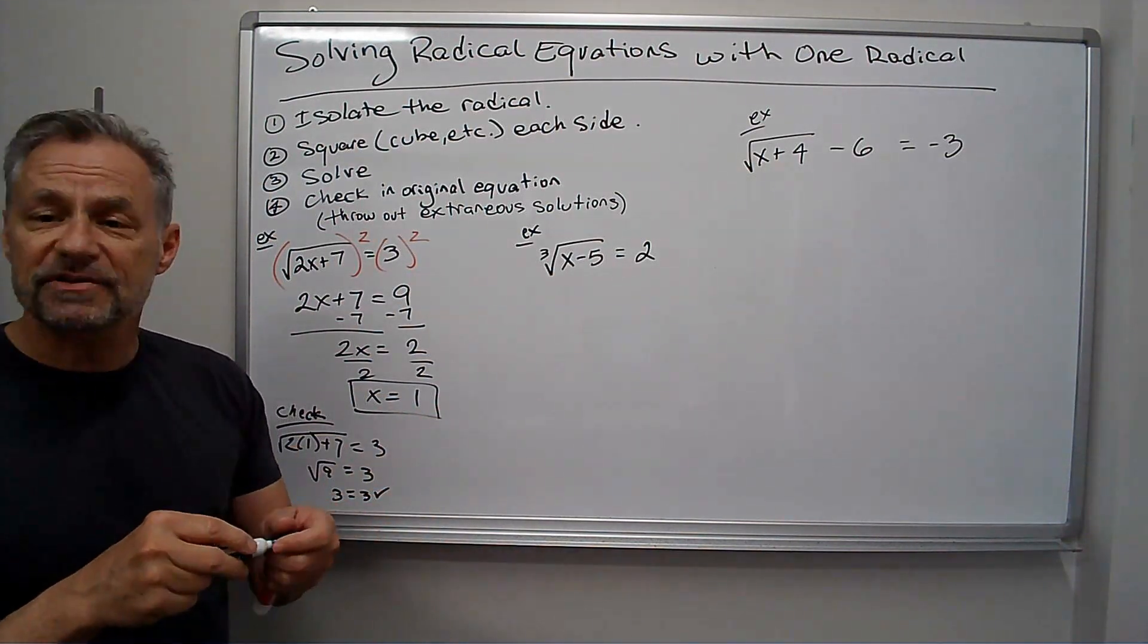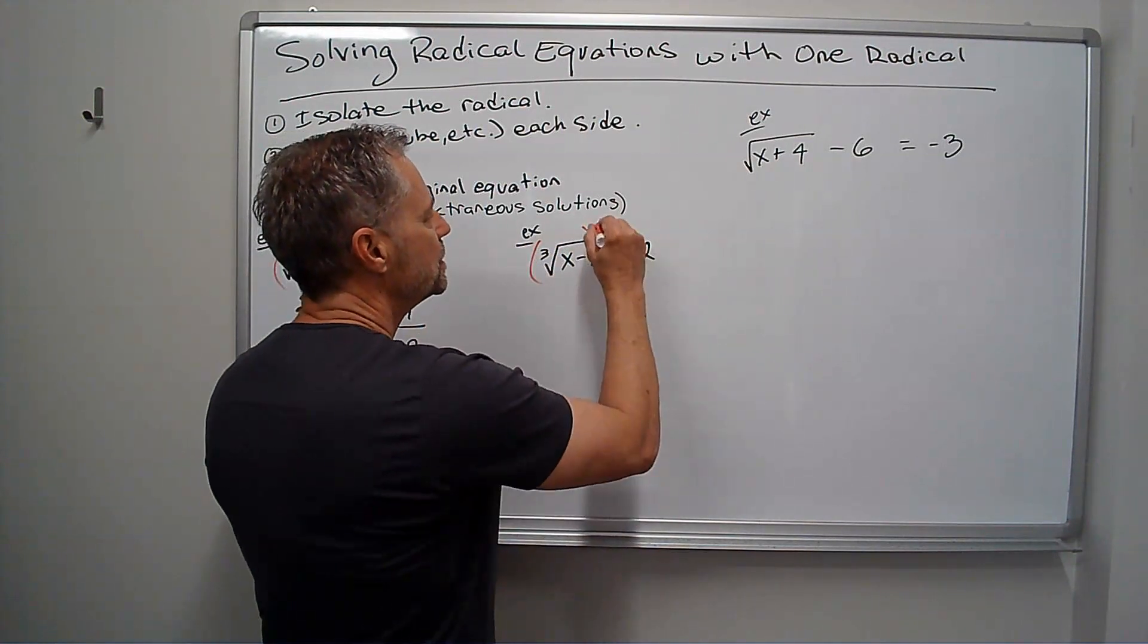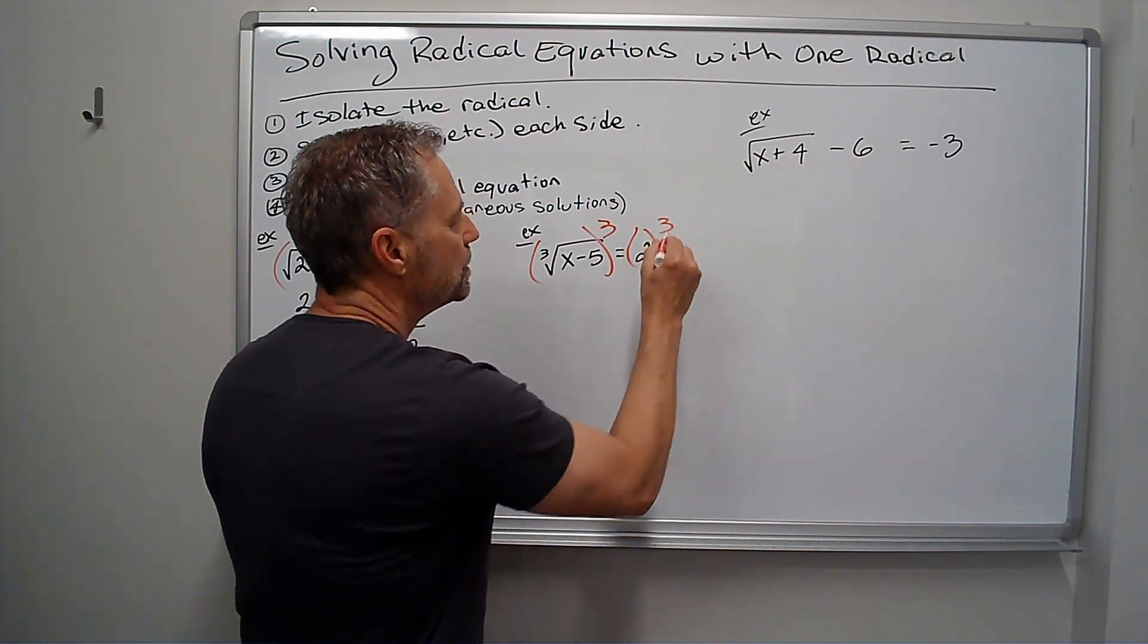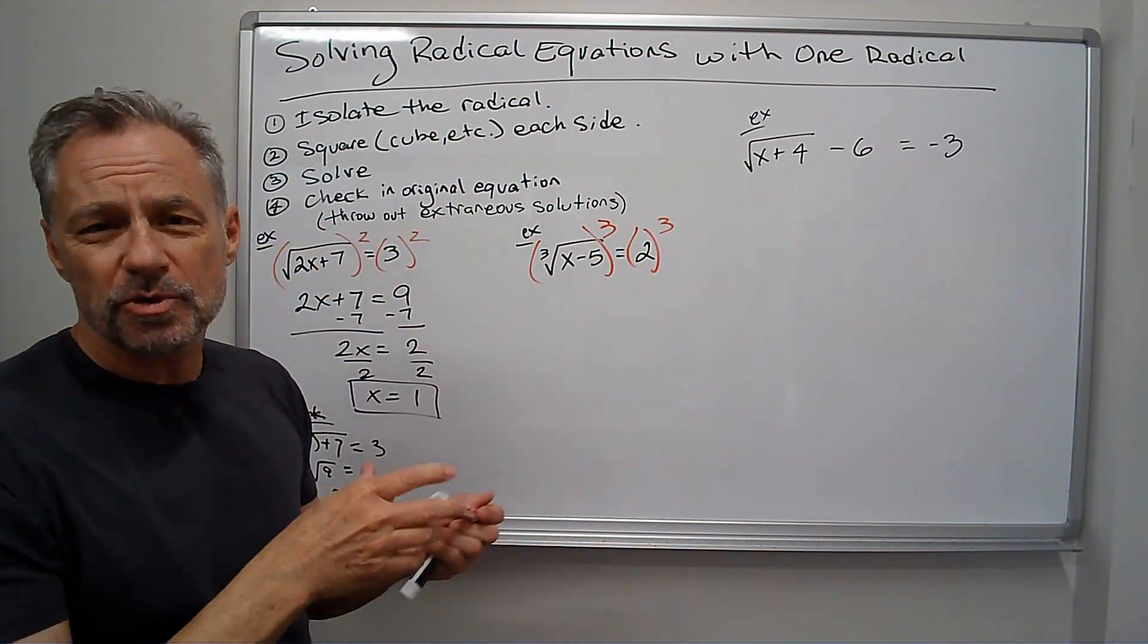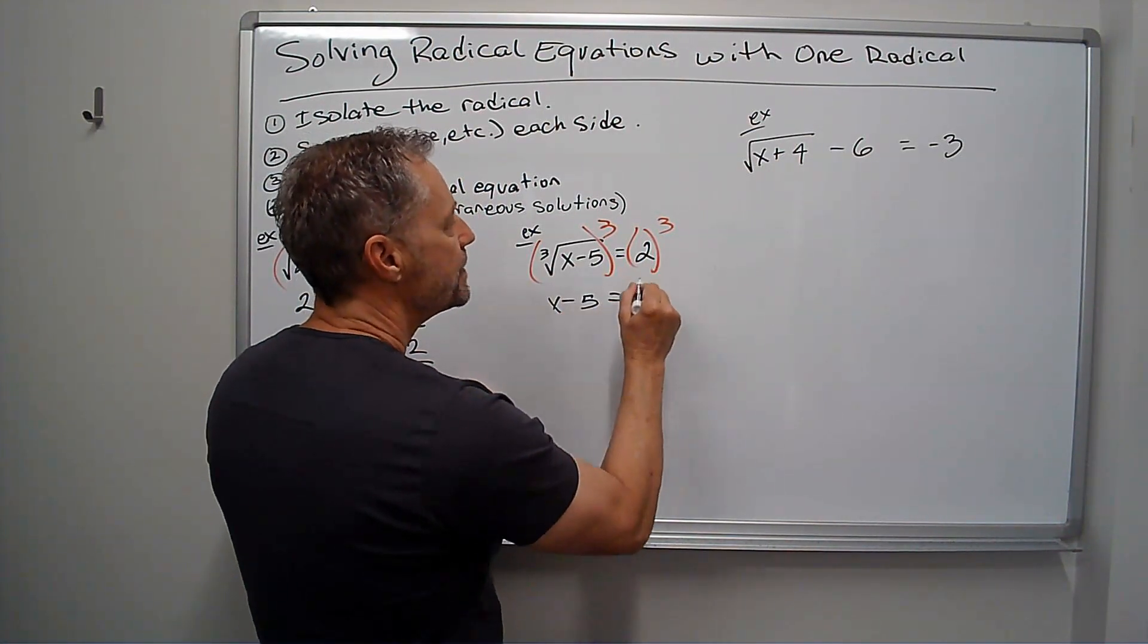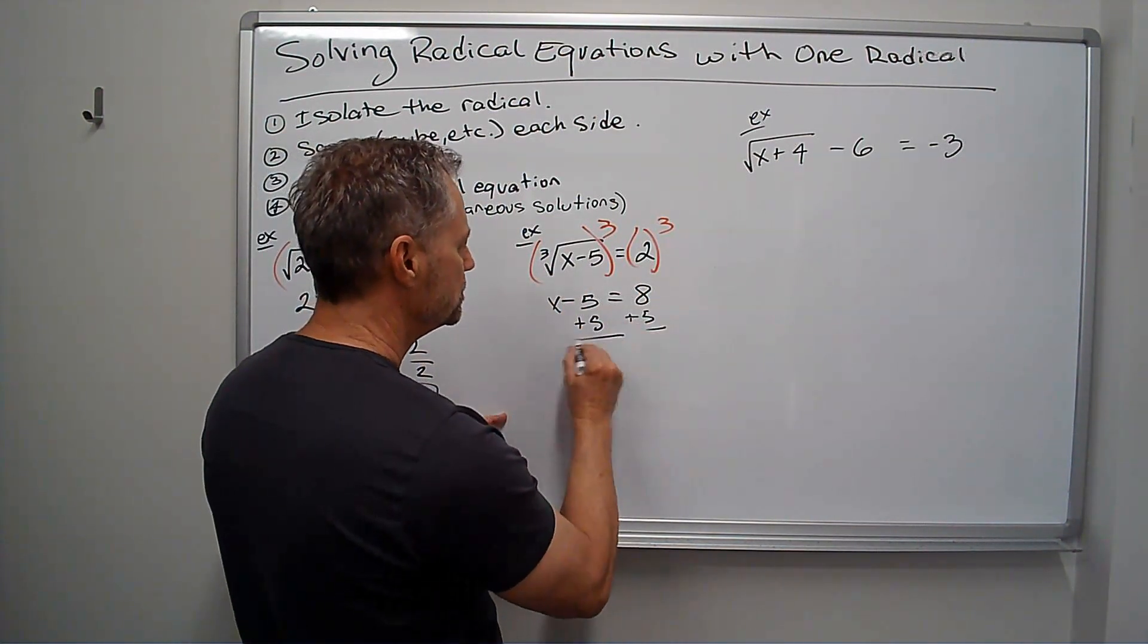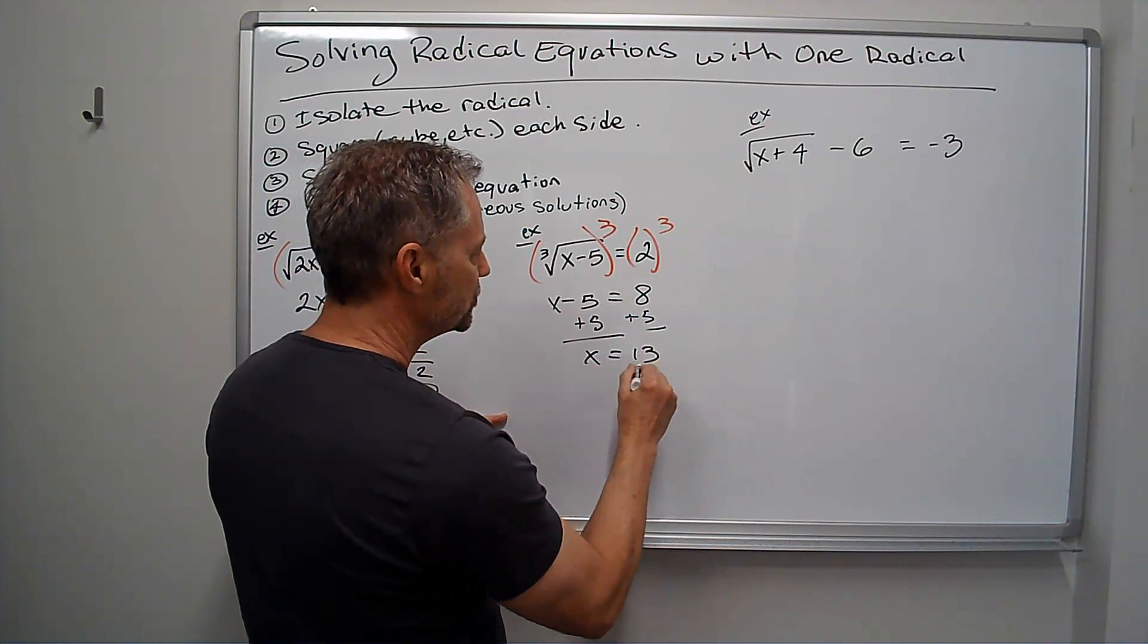Similar problem here. We just have a cube root. It's already isolated. I'm going to cube both sides this time. And so the cube root cancels the cube. I get x minus 5 equals 2 cubed is 8. And then in this case, I'm just going to add 5. x equals 13.